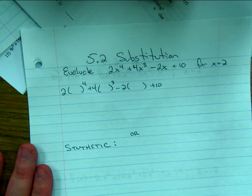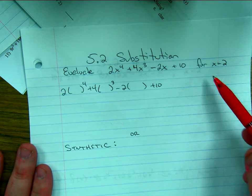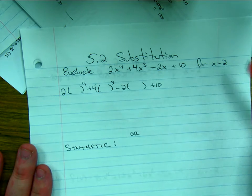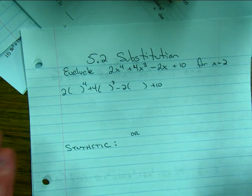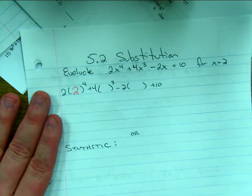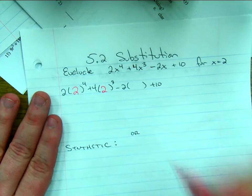You just ask what's the value when X is 2. You substitute 2 in for X and solve. So I'd write a 2 here, I'd write a 2 here, I'd write a 2 here.